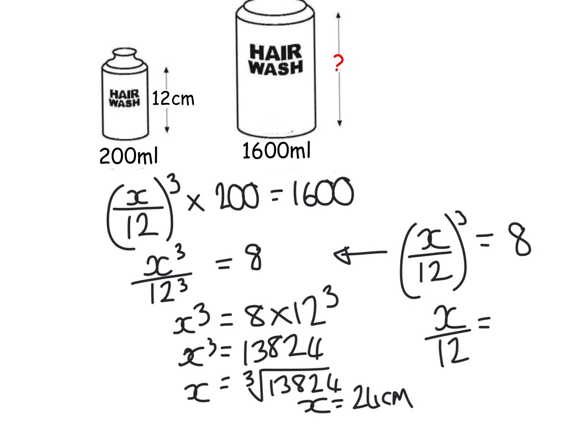So I've got x over 12 is the cube root of 8. So x over 12 is 2. And then cross multiply by the 12, 2 times 12 is 24. So what's essentially happening here in that method, we're getting the volume scale factor is 8. We're getting the enlargement scale factor is the cube root of 8, which is 2. And then saying, right, my missing side is just 12 times 2.